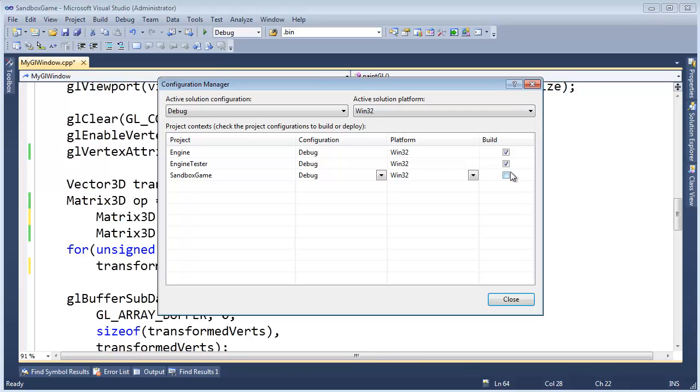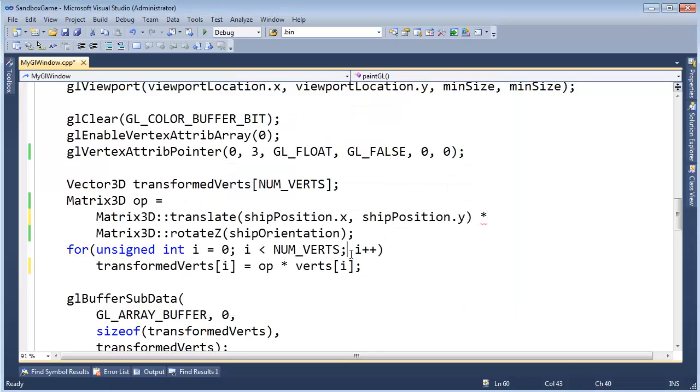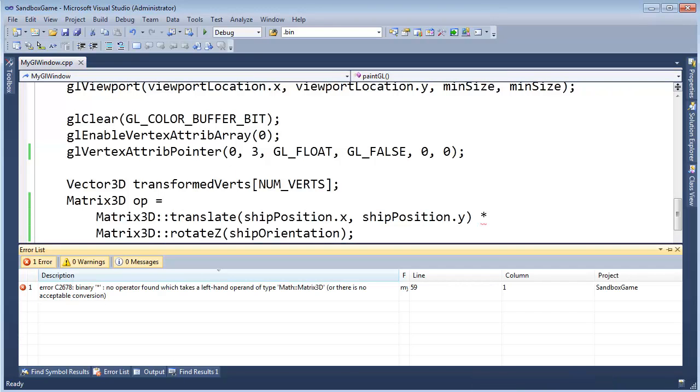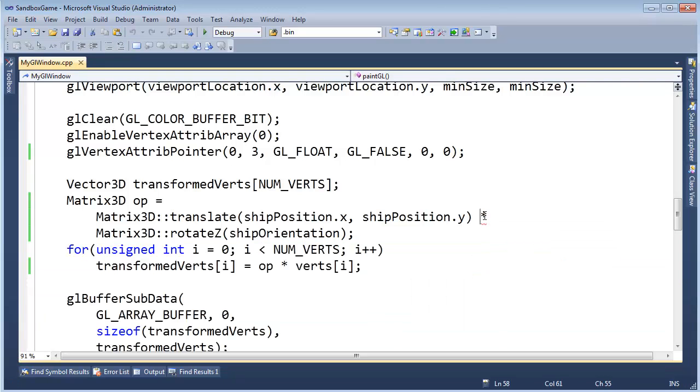Build, configuration manager, turn back on sandbox game. We want to build that. Control, shift, B, build. And binary, you know, operator, which should be... Oh, we haven't written a multiplication operator for two matrix 3Ds.